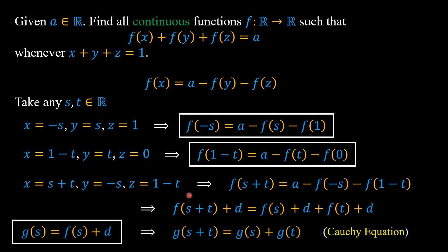If we let g(s) = f(s) + d, then we have g(s + t) = g(s) + g(t), which is known as the Cauchy equation.